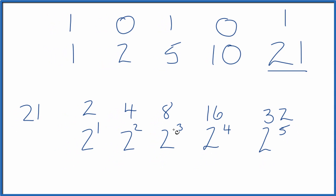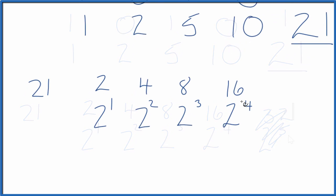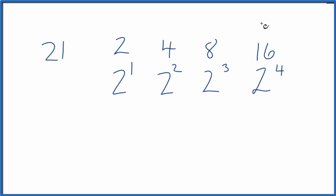So we have 21, and 32 does not go into 21. Let's get rid of that. 16, that goes into 21. So we say yes, it goes into 21. That's true, and we write 1 to show that that's true. Then we subtract 16. We get 5.